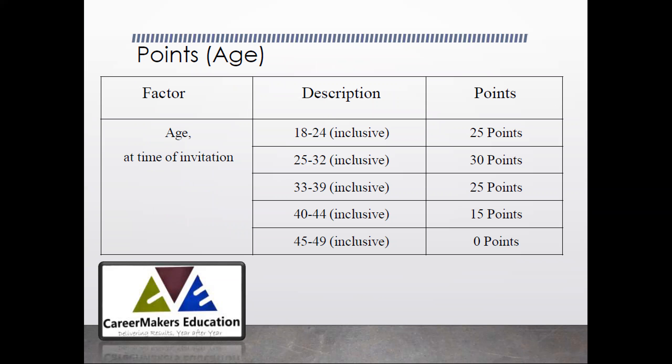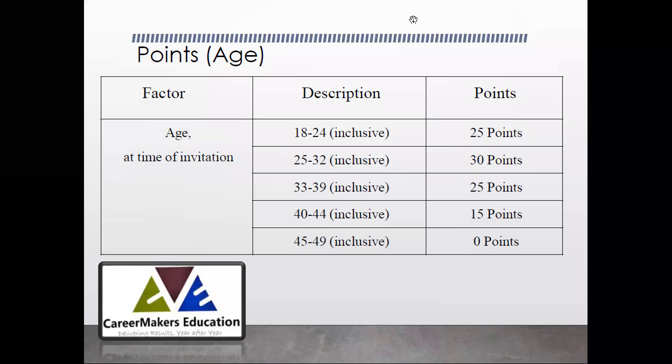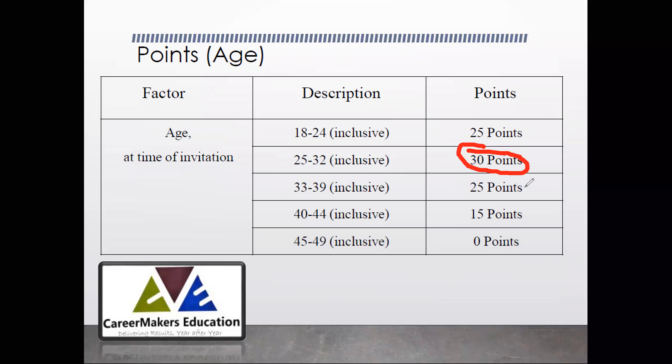For any of these visas, the requirement is 65 points. There are a number of factors from which you get points, and the biggest factor is age. This table will help you understand how many points you get based on your age. For instance, if you are 25, you get 30 points for age. If your age is 34, you get 25 points, so you need to calculate the points you get according to your age.